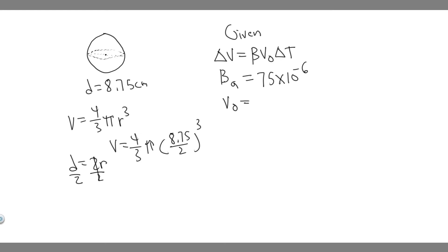Go ahead and plug this into your calculator: 4 divided by 3, multiply it by pi, and then multiply it by (8.75 divided by 2) cubed. When you do this, you get that the initial volume equals 350.77 centimeters cubed, because the diameter was given in centimeters.